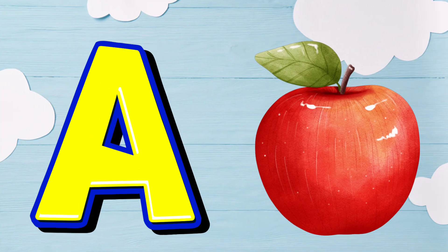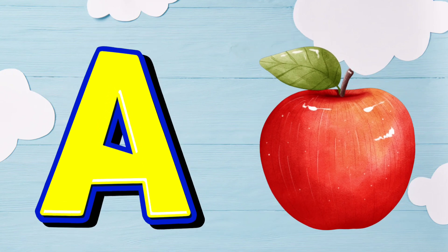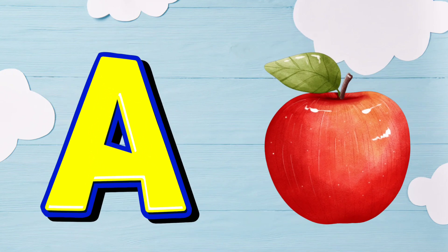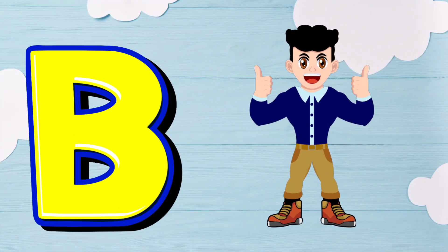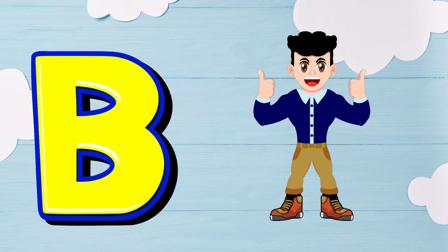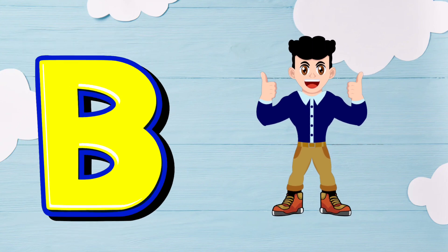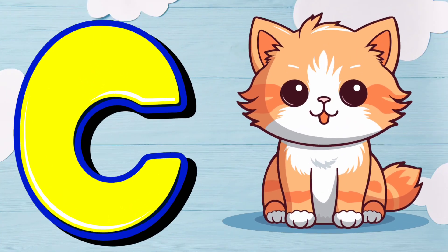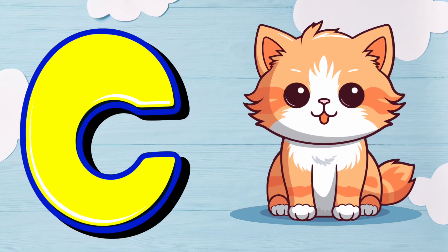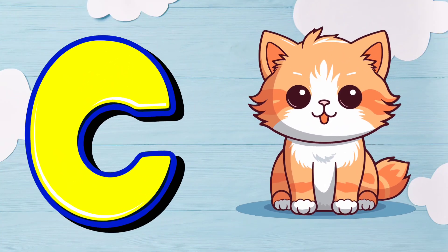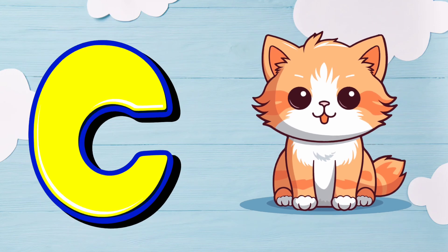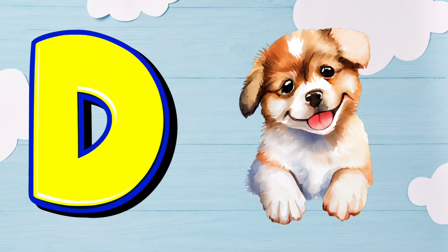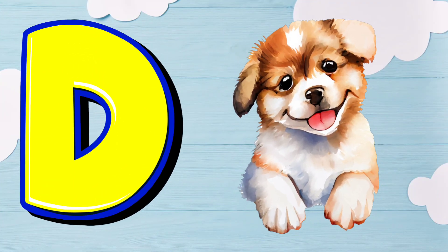A is for Apple. A. Apple. B is for Baby. B. Baby. C is for Cat. C. Cat. D is for Dog. D. Dog.